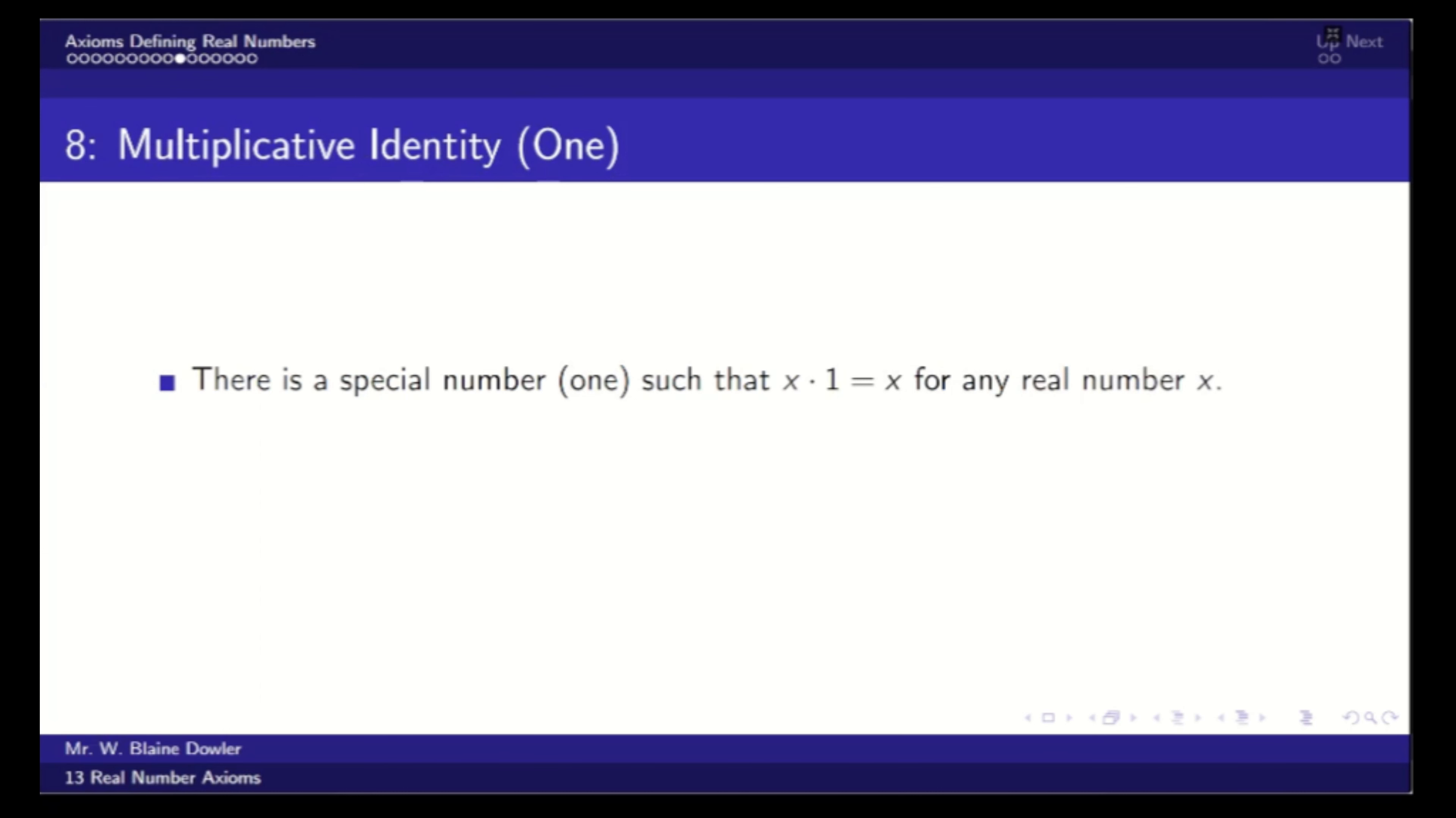Axiom 8 is the multiplicative identity, or 1. So anything times 1 is still that same x, because the identity does not change when it's multiplied by 1.